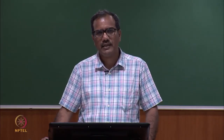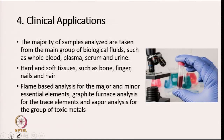The next application is clinical applications. The majority of samples analyzed in clinical settings are taken from biological fluids such as whole blood, plasma, serum and urine. Sometimes we also analyze hard and soft tissues such as bone, finger nails and hair. Flame-based analysis is done for major and minor essential elements, graphite furnace analysis for trace elements, and vapor analysis for toxic metals. Different kinds of flame-based analysis are done for different kinds of metals.